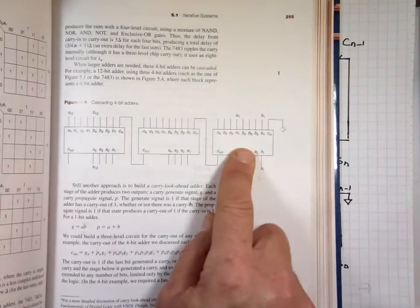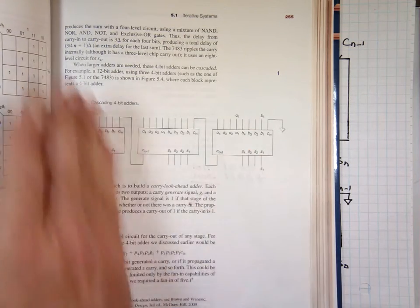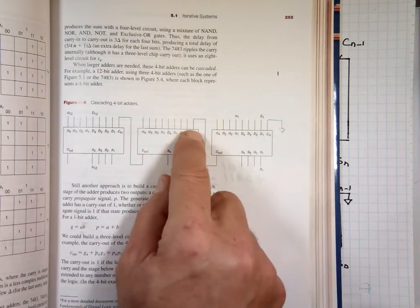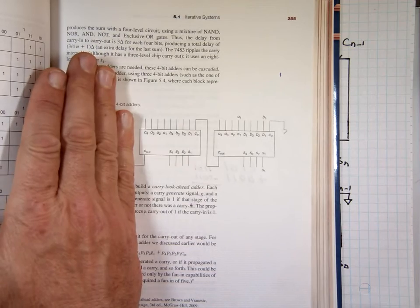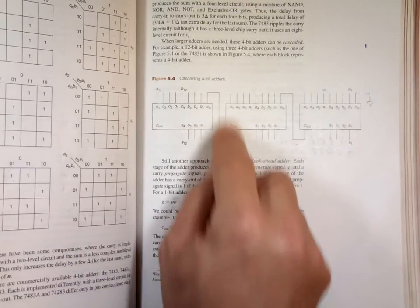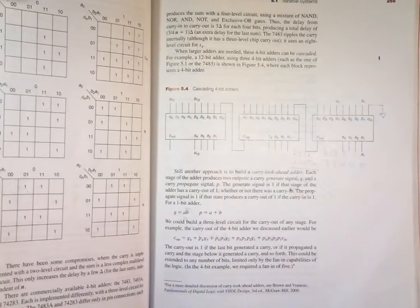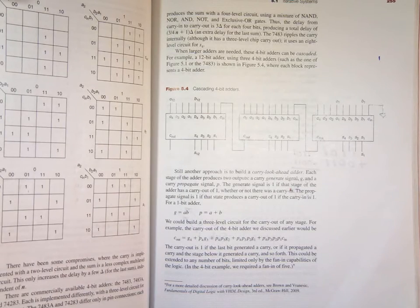So if you need an 8-bit, then you take the carry from this, attach it to this one, and now you have an 8-bit adder. You want a 12-bit, you take the carry from this, attach it, then I have a 12-bit adder. And 16-bit and so forth.